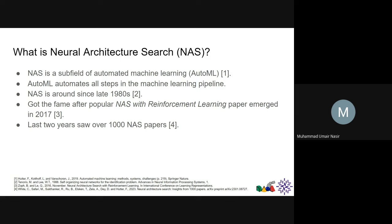NAS has been around since the late 1980s — neural architecture search was proposed back then — but it got its fame in 2017 with a paper named 'NAS with Reinforcement Learning,' and this is where it actually got the deserved fame. In the last two years, we saw over 1,000 NAS papers.